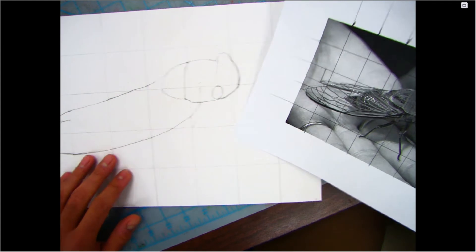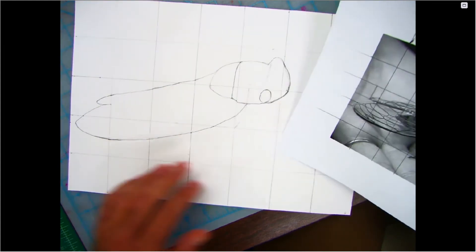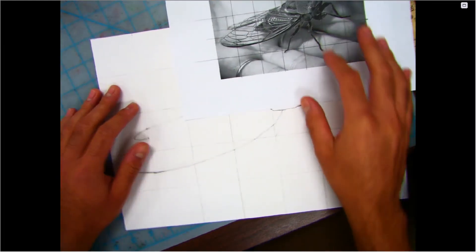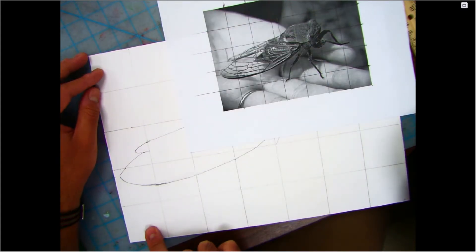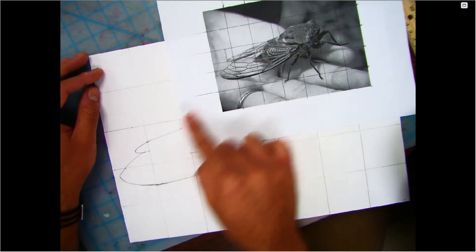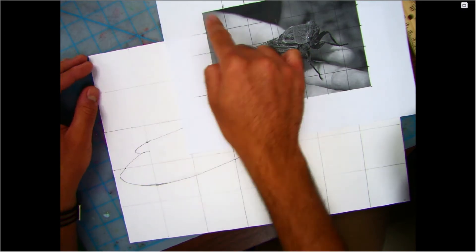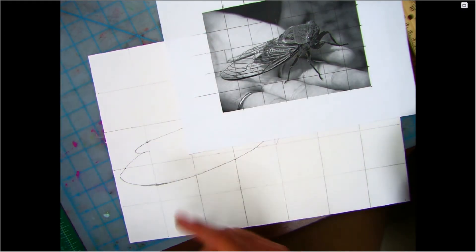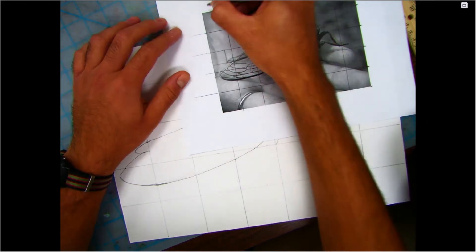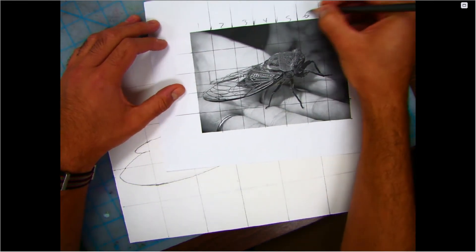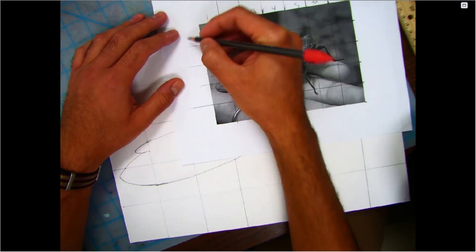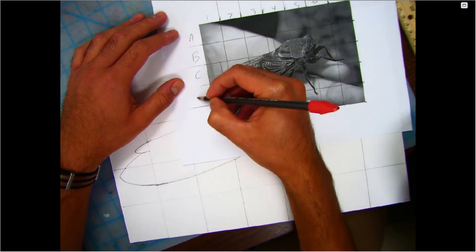So I've already started doing it here. I have an image of the cicada. Essentially what I did, I just started, looked at my image. Each of these squares correlates to a square. So this one correlates to this one, this one here, this one here, this one here, and this one here. If it helps you, you can label them. Like, I don't know if you ever played Battleship, but you can do one, two, three, four, five, six, seven. And then like A, B, C, D, E.